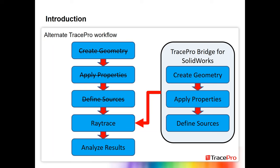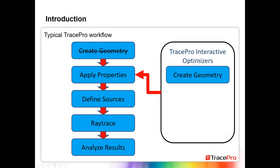If you're working with SolidWorks, we have a program called the TracePro Bridge for SolidWorks, which lets you create geometry, apply all optical properties, and define sources within SolidWorks, saving those as part of the SolidWorks model. You can then export a TracePro OML file to run the ray trace and analyze results in TracePro. We also have 2D and 3D interactive optimizers in TracePro to create geometry and automatically change it to meet user-defined goals like uniformity, illumination pattern, or angular distribution.